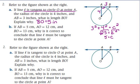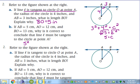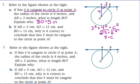Part B resets the whole problem. It says: if AB equals five, AO equals 12, and BO equals 13, why is it correct to conclude that line L must be tangent to the circle at point A? Well, if it's tangent, it forms a right angle. So if it forms a right angle, the Pythagorean theorem should hold. AB and AO are legs, so five squared plus 12 squared — let's check whether that equals BO squared, which is 13 squared.